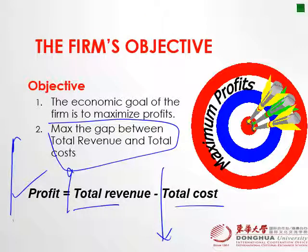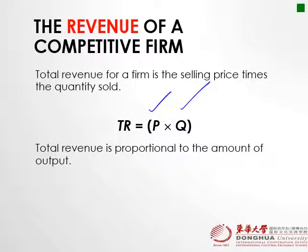The economic objective of the firm is to maximize profit — the gap between total revenue and total cost. There are two ways to do that: either increase total revenue or decrease total cost. Total revenue is calculated as price multiplied by quantity.